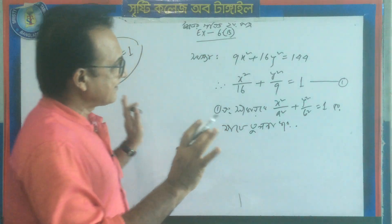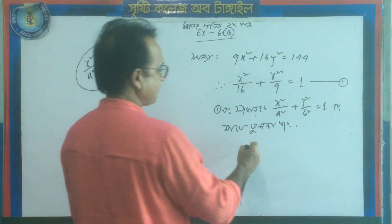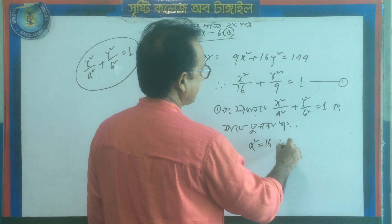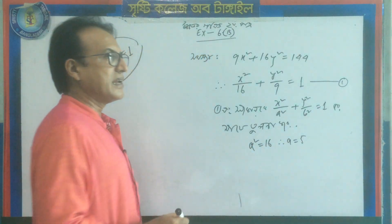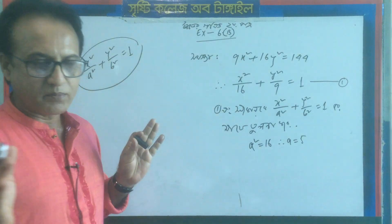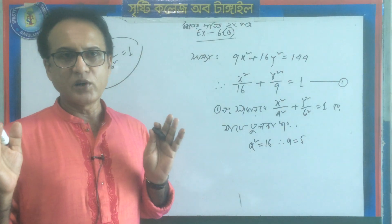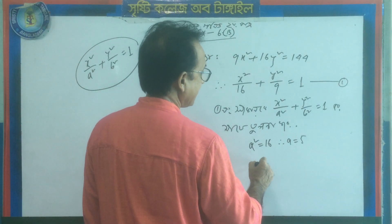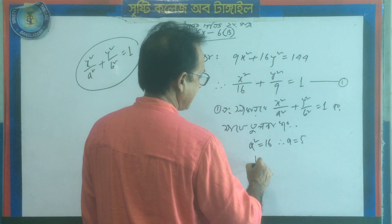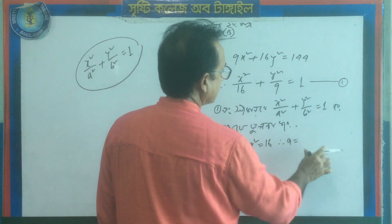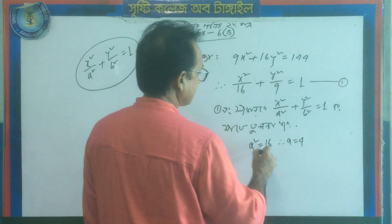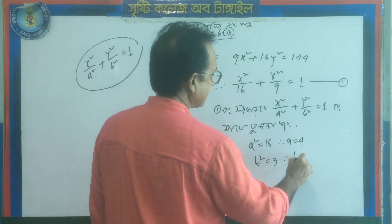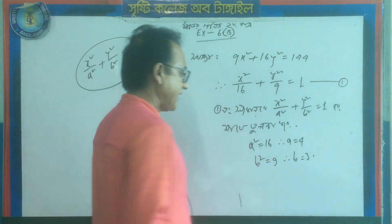How do I find the answer? A squared is 16, so A is 4 — we have plus or minus 4. B squared is 9, so B is 3.